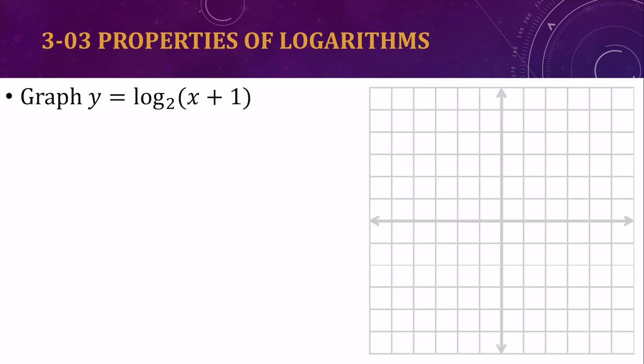So let's graph this logarithmic function. So this is x minus negative 1, which is the x minus h. So h is negative 1. Our vertical asymptote was x equals h. So in this case, it will be x equals negative 1. So I'm going to have a vertical asymptote here, x equals negative 1.